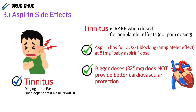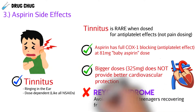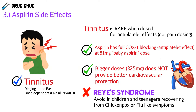A bigger dose like 325 milligrams does not provide better cardiovascular protection — we get full cardiovascular protection at the small dose. Also, even though aspirin is approved for children over age three, we want to avoid giving aspirin to any child or teenager because of the risk of Reye's syndrome — a rare but serious complication causing confusion, brain swelling, and liver damage. We typically see it when teenagers are recovering from chicken pox or the flu.